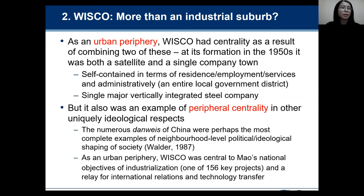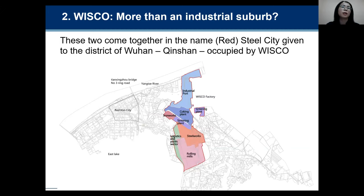As an urban periphery, Wisco was central to Mao's national objectives of industrialization. Wisco was established in the 1950s as part of China's first five-year plan — one of the 156 key projects to develop heavy industry. It is also a relay for international relations and technology transfer. These two come together in the name Steel City, or Red Steel City, given to the Qingshan district of Wuhan, occupied by Wisco.